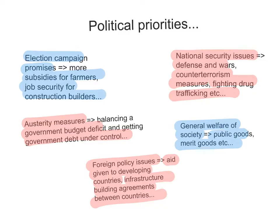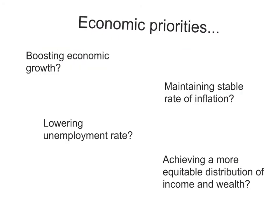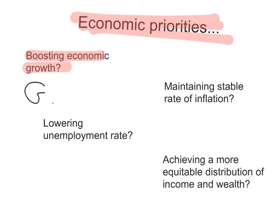Now let's move on to economic priorities. What are some of the economic priorities that affect government spending? If the government's economic priority is to boost economic growth, it's likely going to spend more — so government spending will increase, aggregate demand will increase, and the curve will shift to the right.